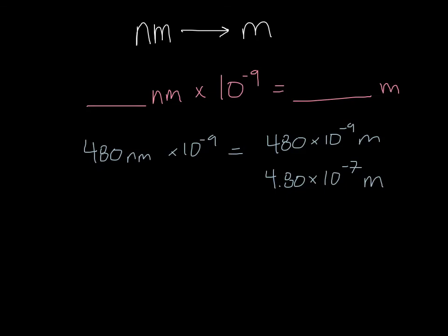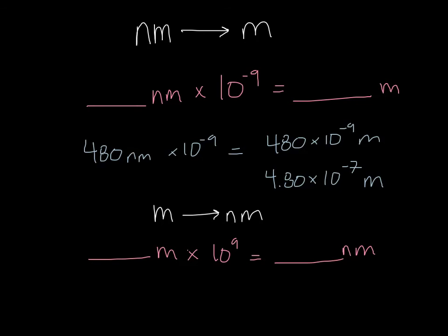This is a really small number — in this case, it's just 480 with six zeros in front, so very, very tiny. Sometimes you might have to convert back from meters to nanometers, in which case it's just the opposite process: you have blank meters, multiply by 10 to the positive 9th, and that gives your answer in nanometers. For example, 3.90 times 10 to the negative 7th meters multiplied by 10 to the 9th gives us 390 nanometers.